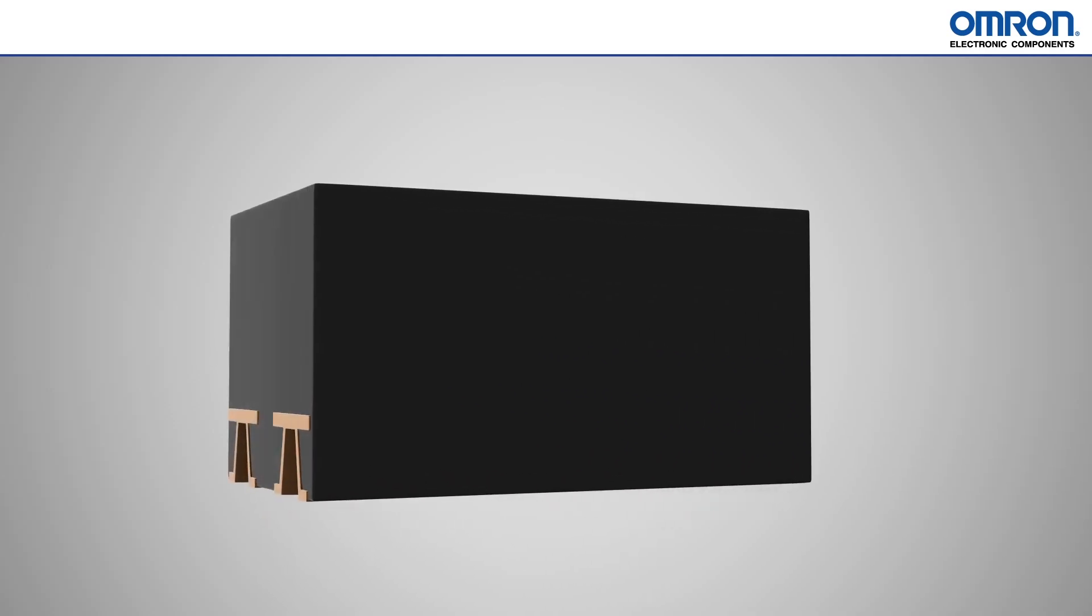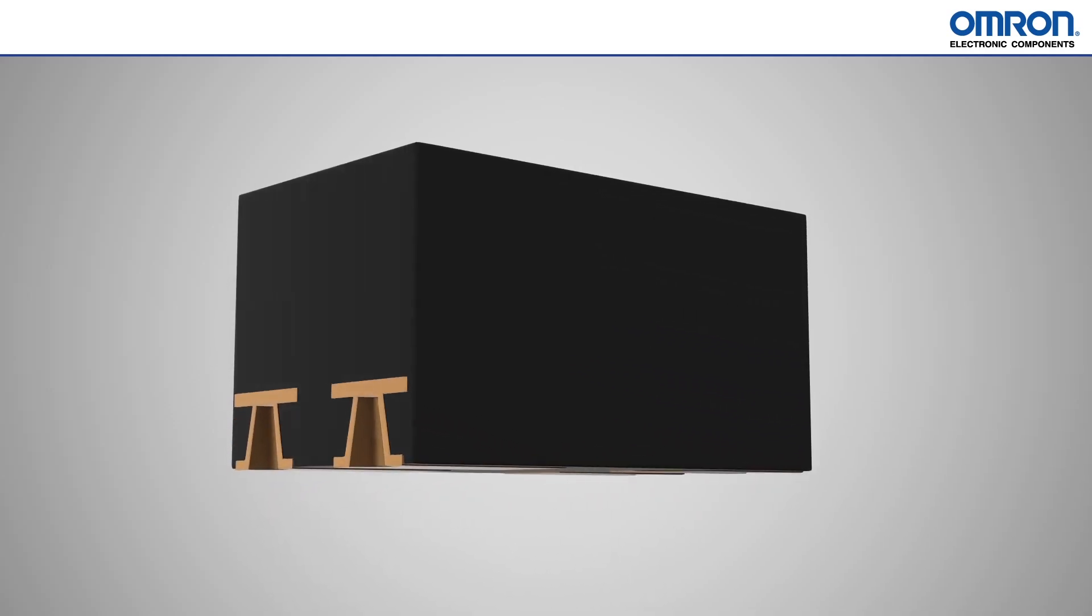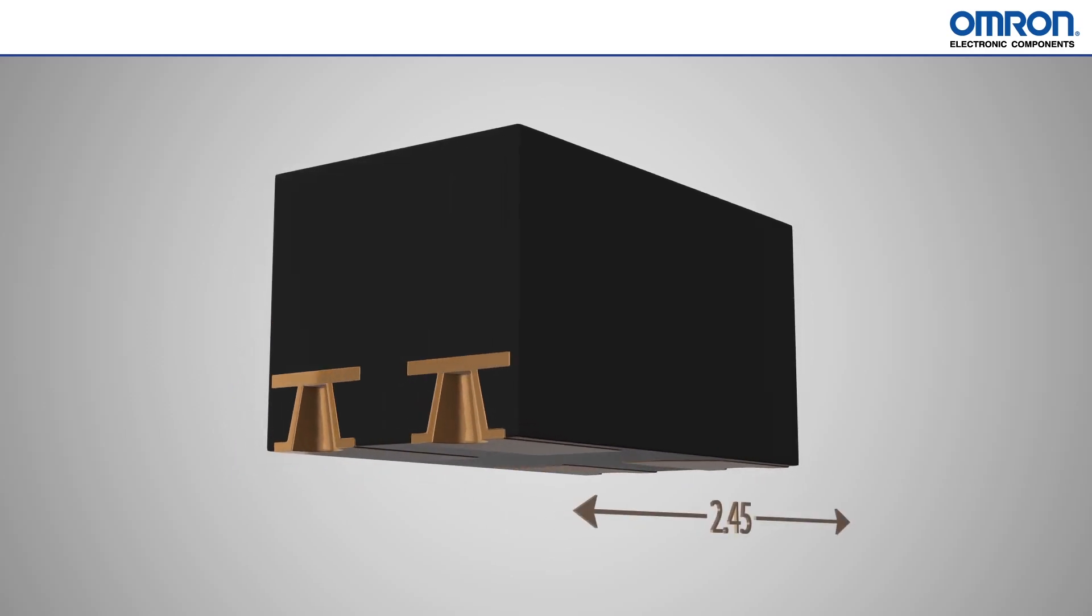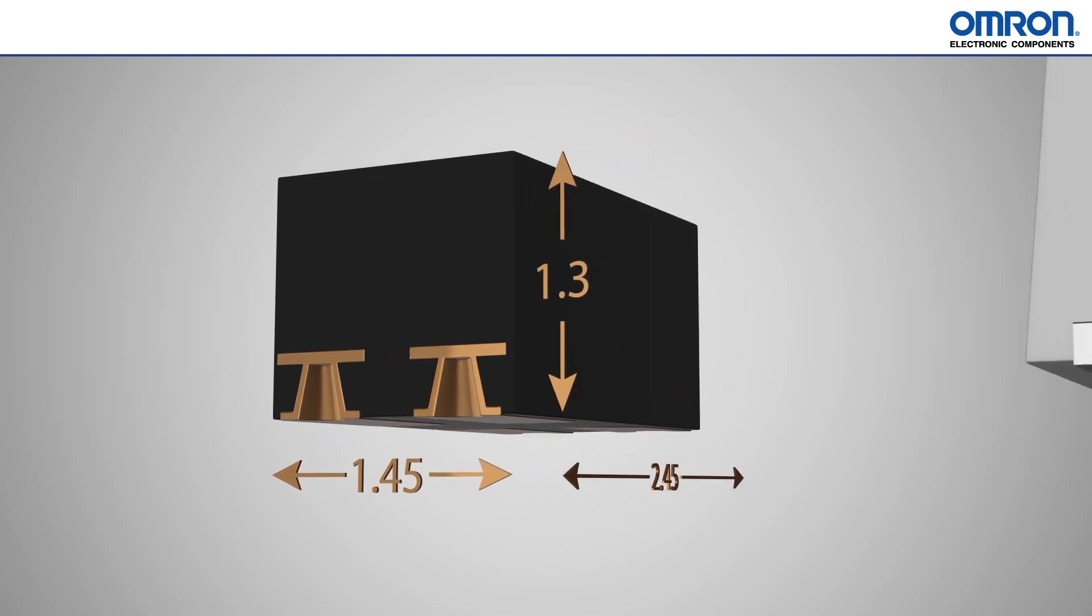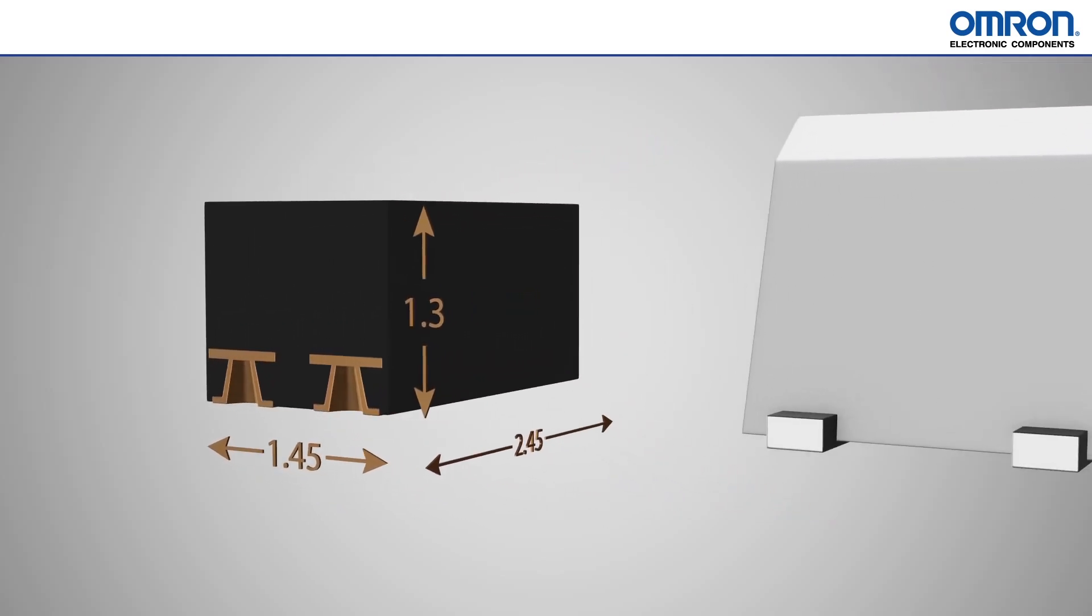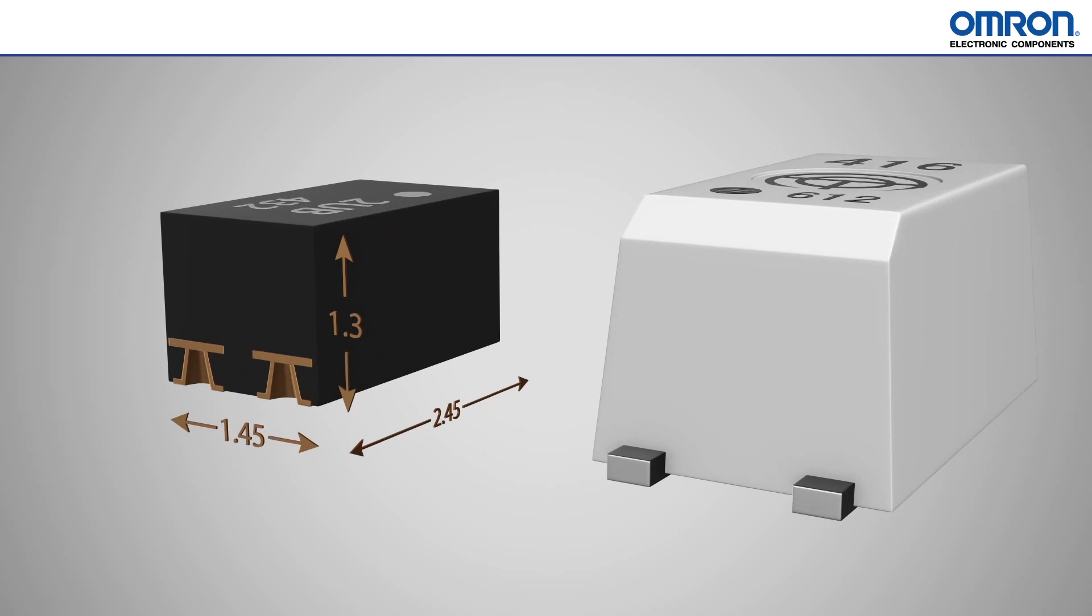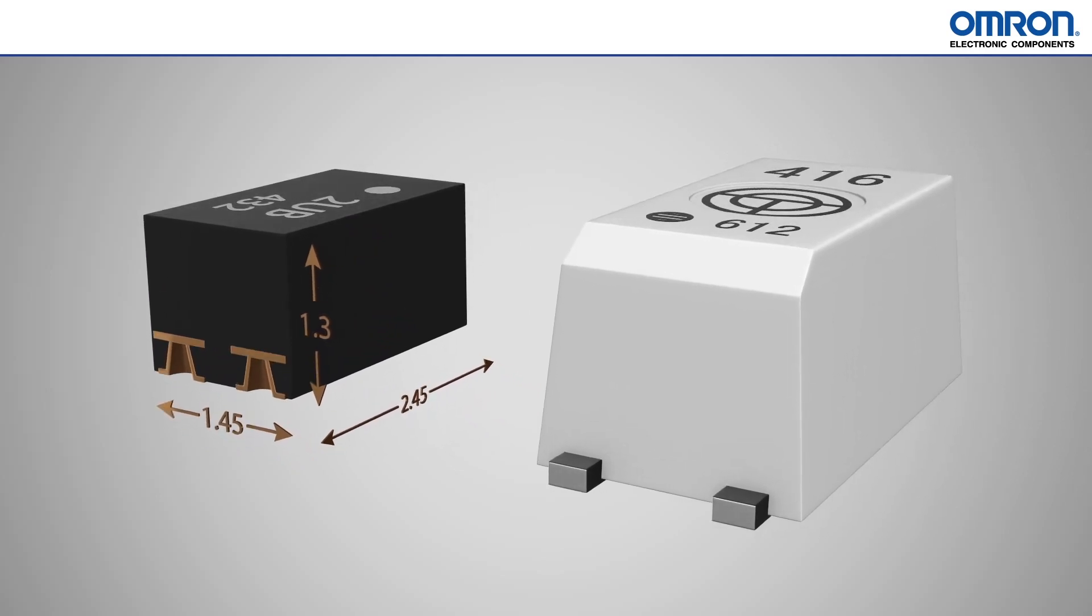VSON stands for Very Small Outline No Leads, an SMT package measuring a mere 2.45x1.45x1.3mm. This offers a 50% decrease in bottom surface area compared to USOP packaging, while the land contacts are designed to improve solderability.